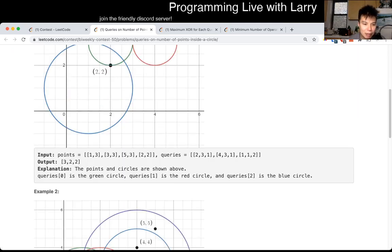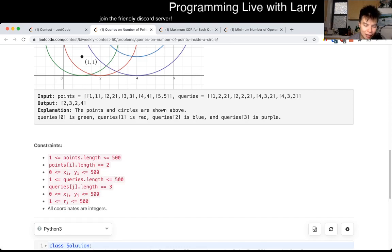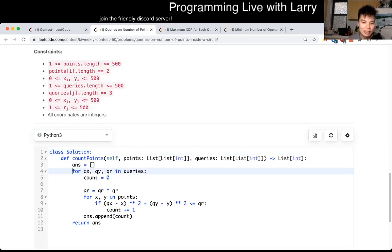The key note is that the number of points is 500 and the number of queries is 500, so that means that you can actually, for each query, if you loop through every point, that's fast enough because that's just 500 times 500 or P times Q, where P is the number of points and Q is the number of queries, and that's essentially what I did.